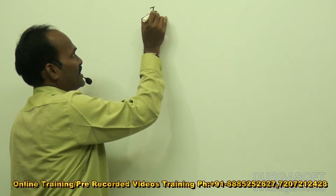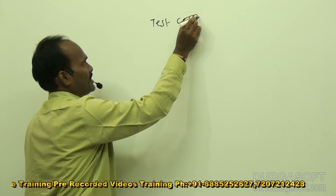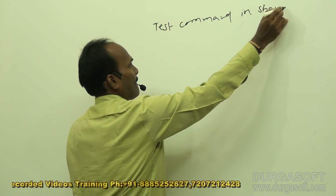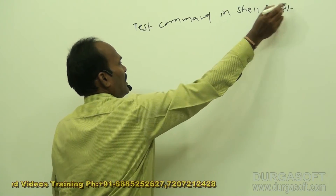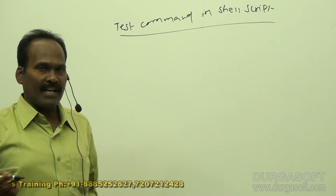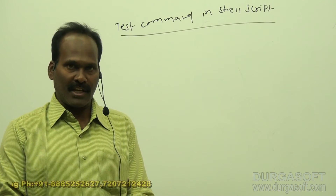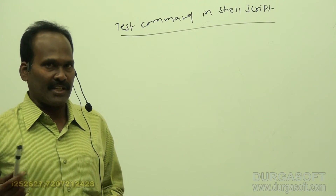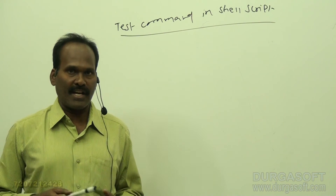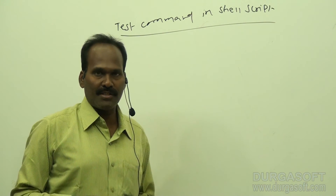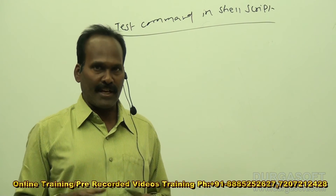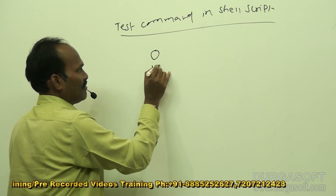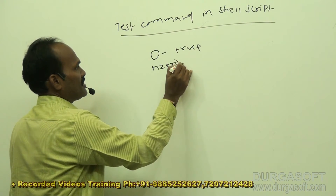The next command I will discuss is the test command in shell script. This test command is used for checking text expressions — for checking numbers, equality checking, and file existence. It checks a logical expression: if the logical expression returns true, it returns zero; otherwise it returns a non-zero value. Zero indicates true, non-zero indicates false.